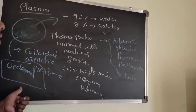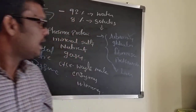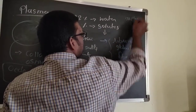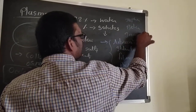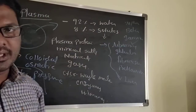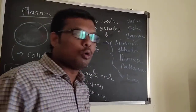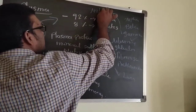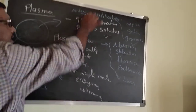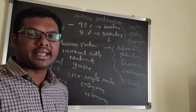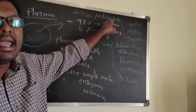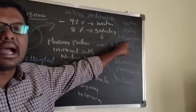Edema is formed due to deficiency of albumin. Globulins have three types: alpha globulins, beta globulins, and gamma globulins. Alpha and beta globulins are present in the blood cells, that is in the RBC. Gamma globulins produce antibodies.